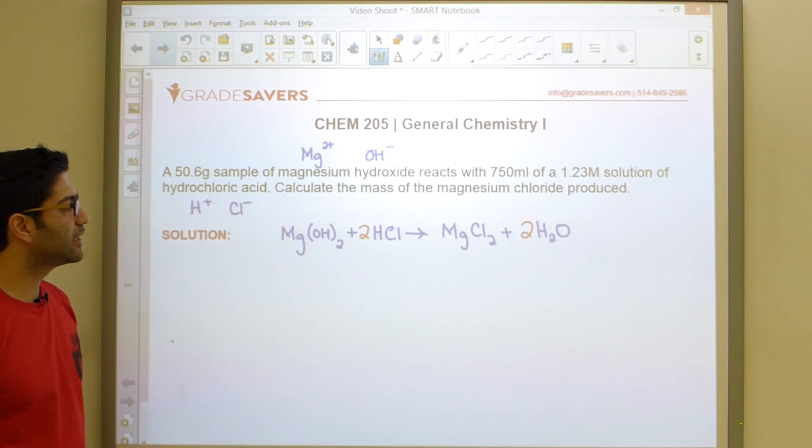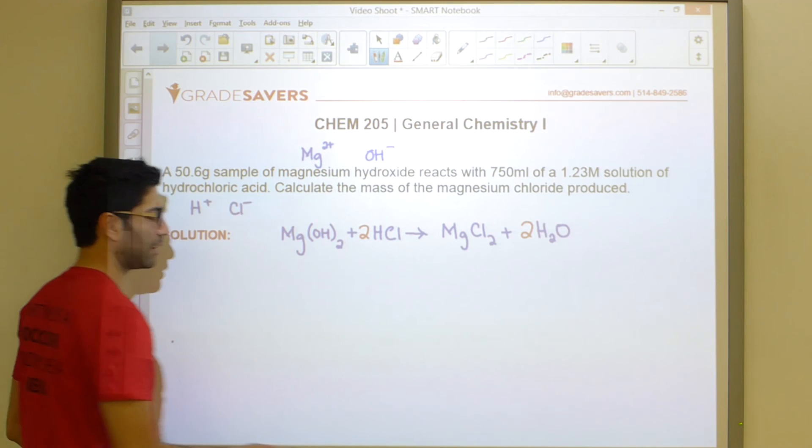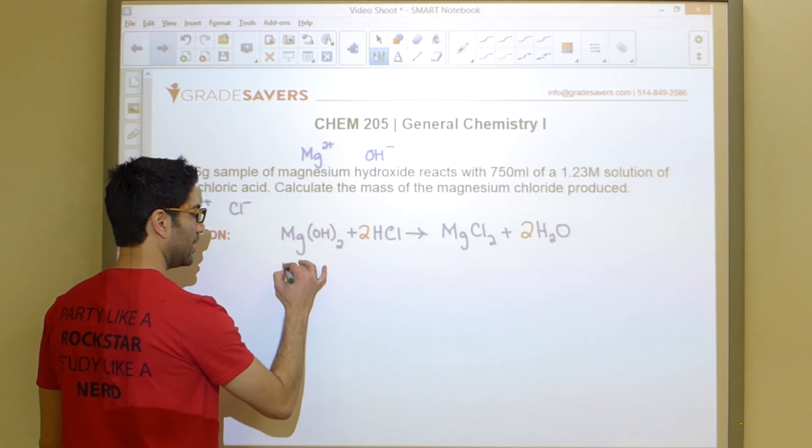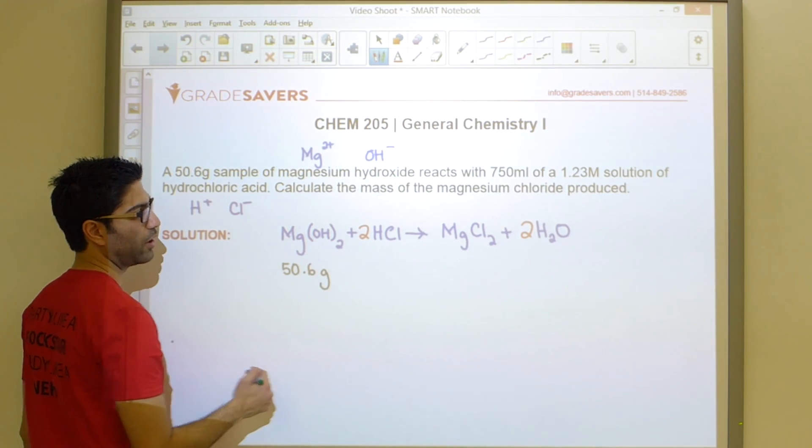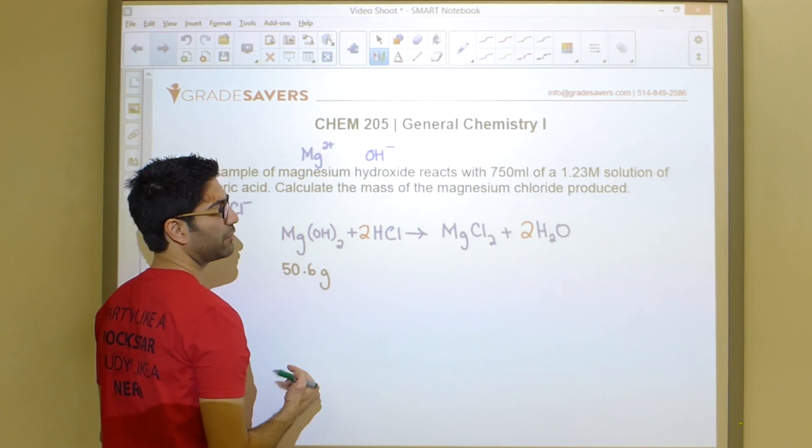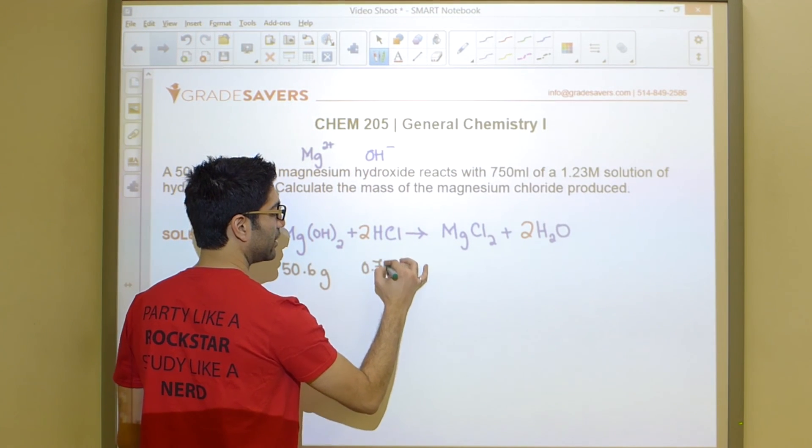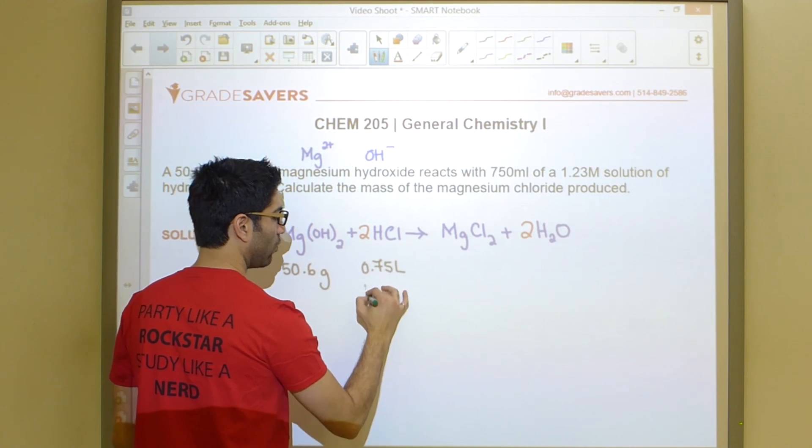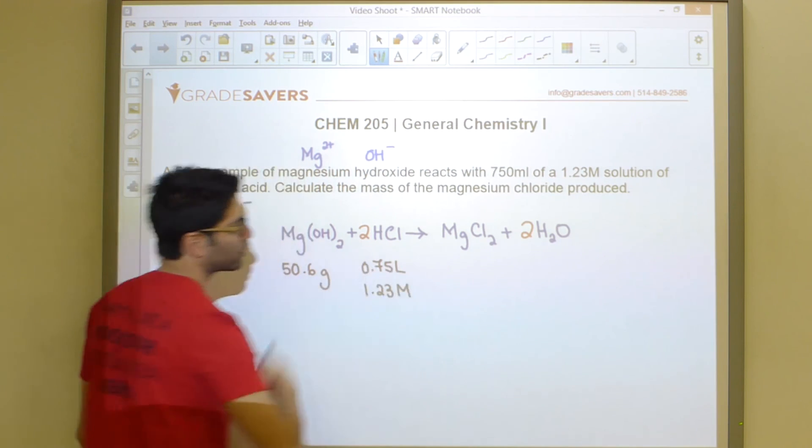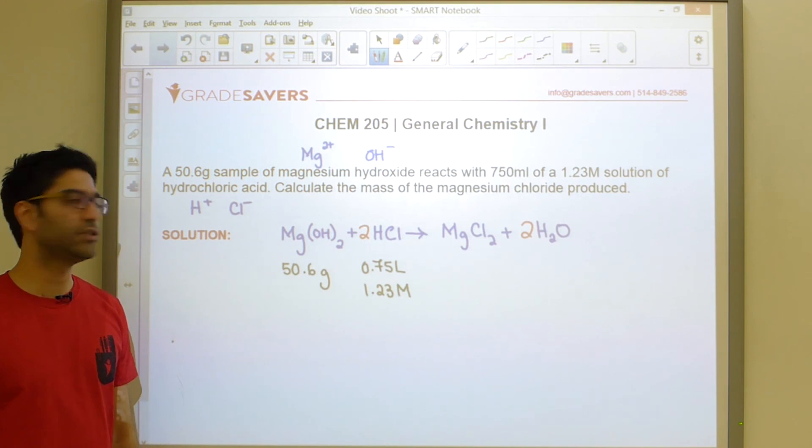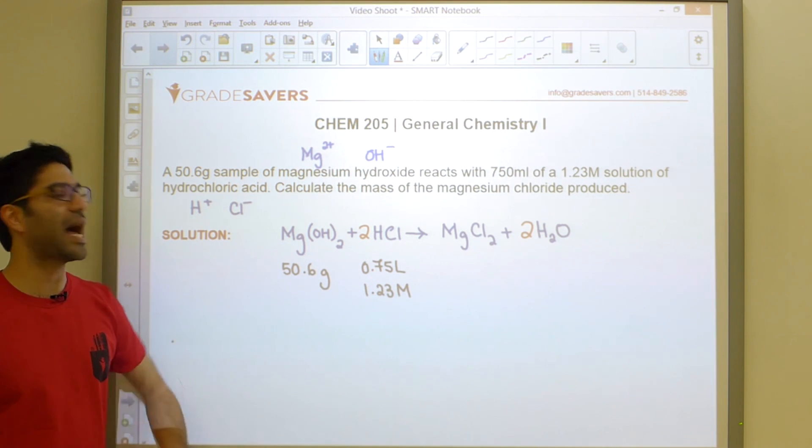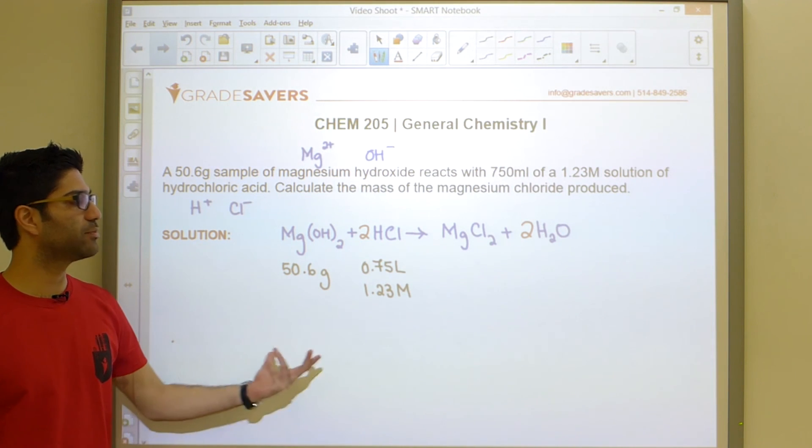The next step of the process is to take a look at the information given to us in the problem. They are telling us a couple of things. Number one, we have 50.6 grams of magnesium hydroxide. Furthermore, we have 750 milliliters or 0.75 liters of a 1.23 molar solution of hydrochloric acid. This is where you have to stop and all kinds of bells need to go off in your head because this is how you know that we have a limiting reagent problem.